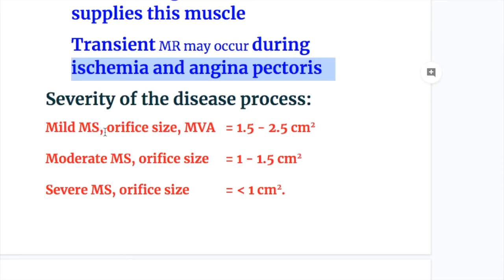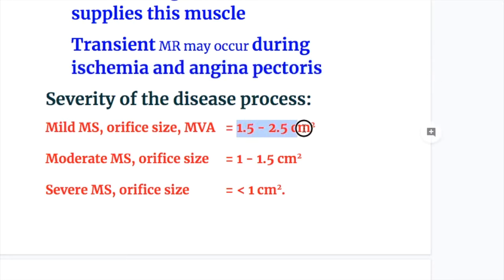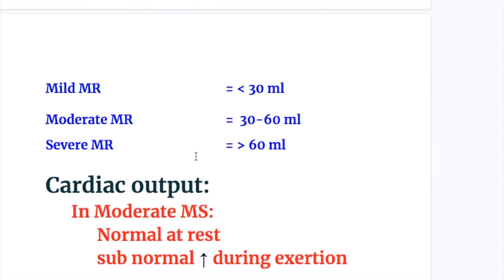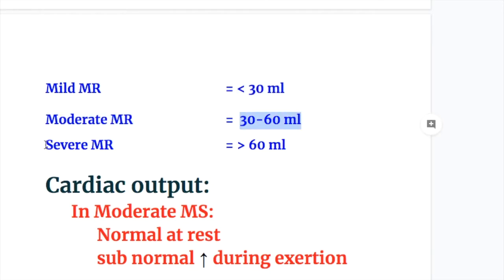Severity differences: Severity of mitral stenosis depends on the decrease in orifice size — mild: 1.5–2.5 cm², moderate: 1–1.5 cm², severe: less than 1 cm². Severity of mitral regurgitation depends on the volume of blood that regurgitates back into the left atrium — mild: less than 30 ml, moderate: 30–60 ml, severe: more than 60 ml.